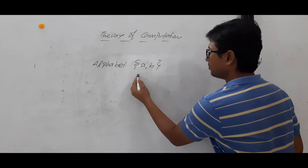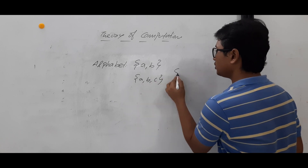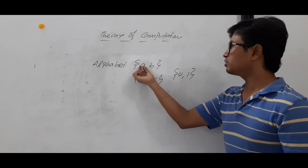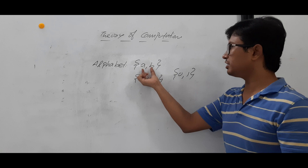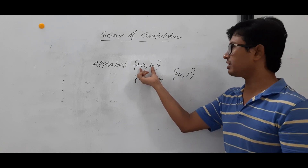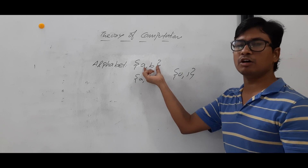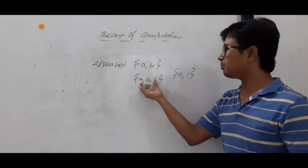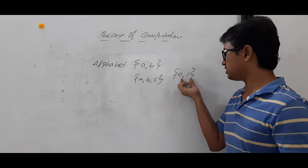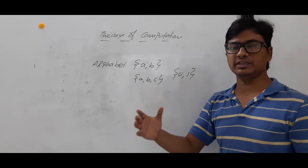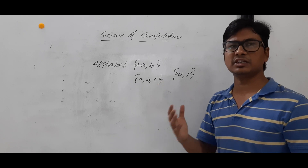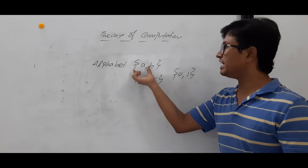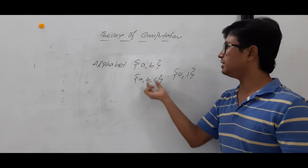An alphabet can be {0, 1} or any symbols — it is a finite set of symbols. Whatever strings we generate, we generate them using this alphabet. If our alphabets are {a, b} we generate strings using a and b only. If our alphabets are {a, b, c} we use those only. Programming languages use a to z, A to Z, 0 to 9, and special characters as their alphabet. So an alphabet is simply a finite set of symbols.